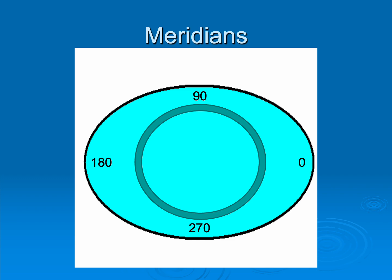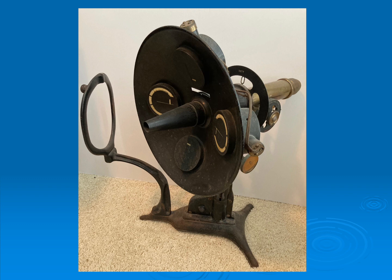A meridian is a line from the limbus through the center of the cornea out the other side of the limbus. So if you draw a line from 0 to 180, that would be the 0-180 meridian. If you want to measure the power of the cornea, you need a device like this — a keratometer. This keratometer was built in the 1930s, but it does the same thing as manual keratometers in your clinic: it takes a reflection off the cornea and uses a formula to calculate corneal power. These are called keratometry readings, or as the cool kids say, K-readings.